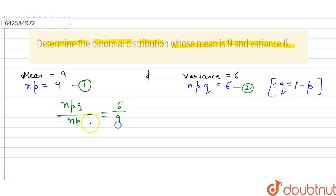it is the value of 1 minus p that is equal to 2 divided by 3, and from here value